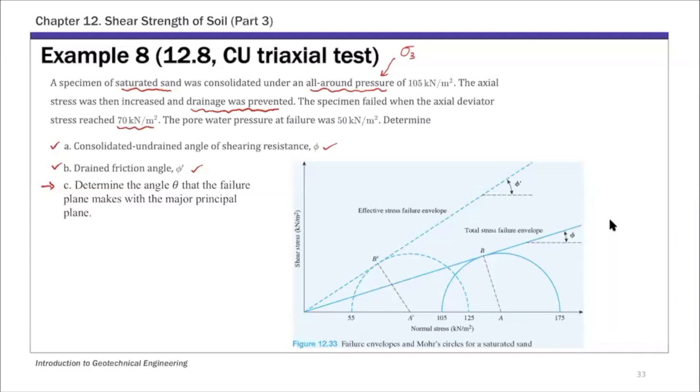This deviator stress is what we call delta sigma d at failure, delta sigma df. The pore water pressure at failure is delta ud at failure. When you read this problem statement, you need to link all these known quantities to what we discussed in class. These are basically sigma 3, delta sigma df, and delta udf.